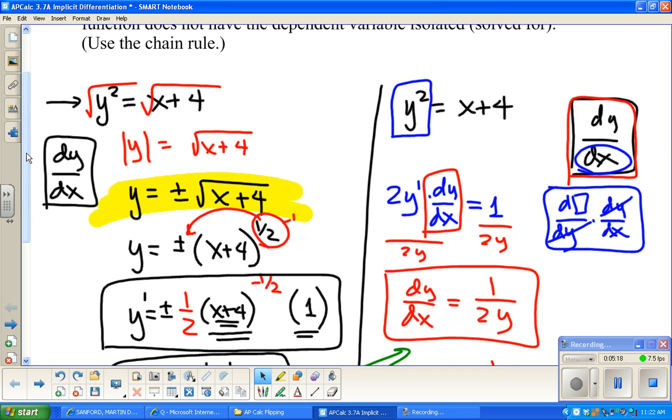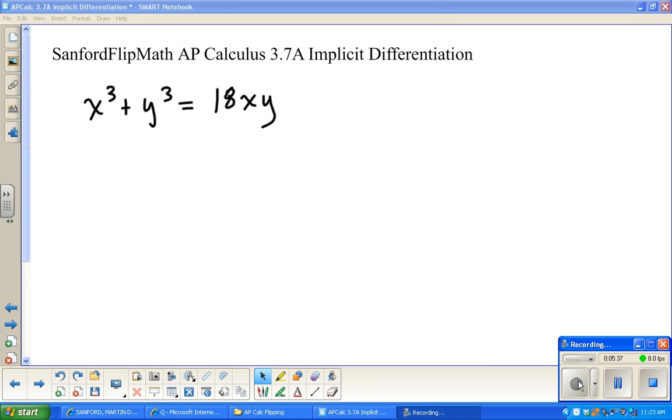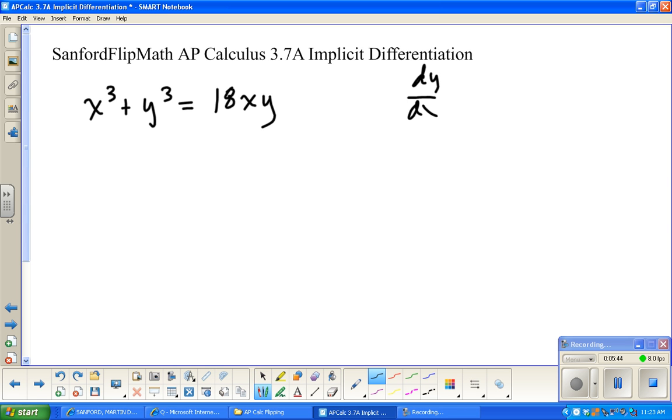And anywhere I do a derivative involving y, by the chain rule, I'm going to multiply by dy/dx. Alright. Let's do another one. I tell you it's magic. Alright. So, we're going to do the same idea. We're going to find dy/dx. So, we're going to go through x cubed plus y cubed equals 18xy. And go term by term, piece by piece, and find the derivative.